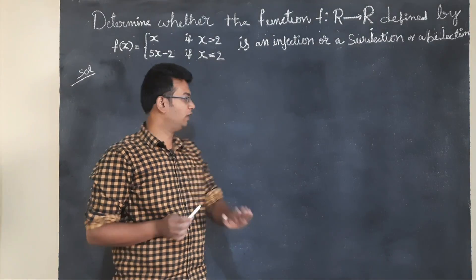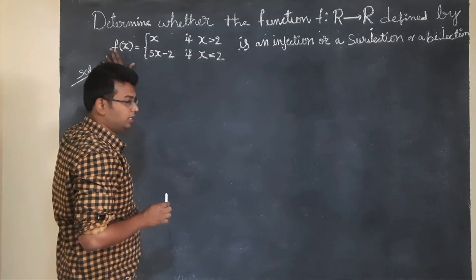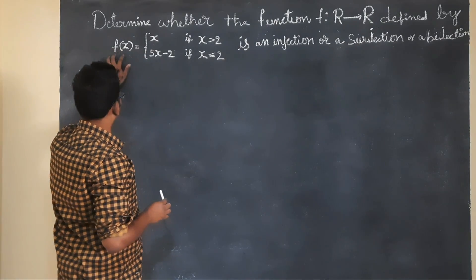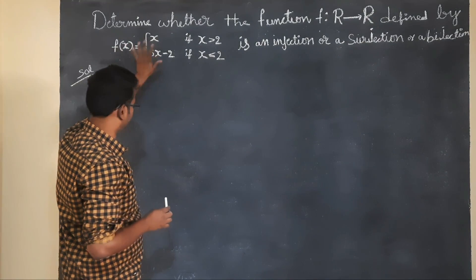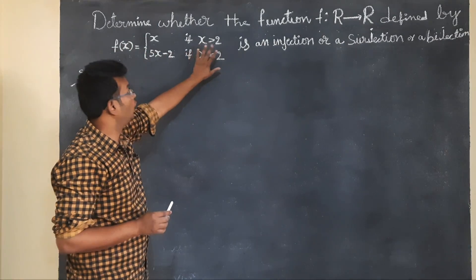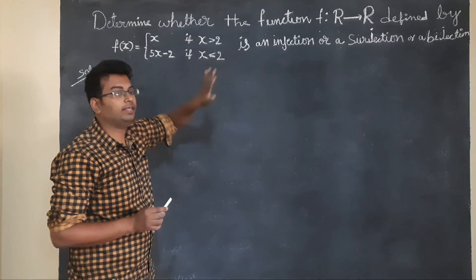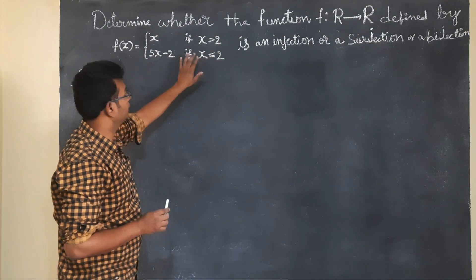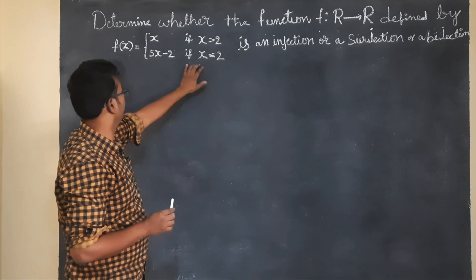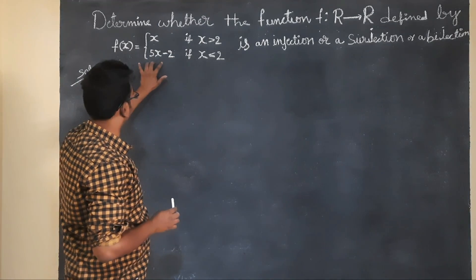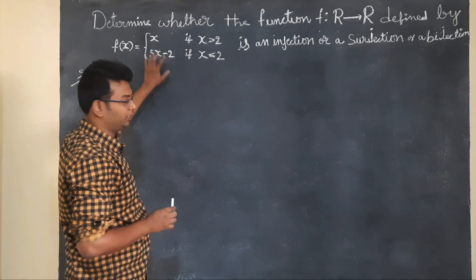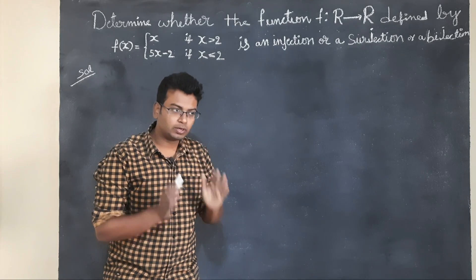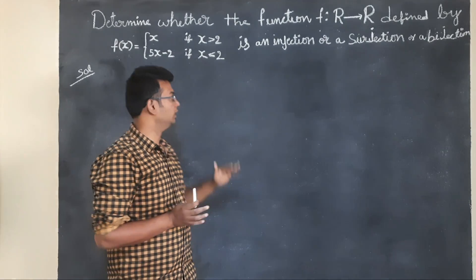The function has two conditions. First condition: f(x) = x when x > 2. Second condition: f(x) = 5x − 2 when x ≤ 2. We will check both conditions based on injection.